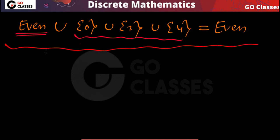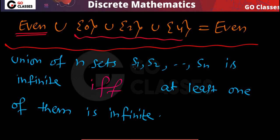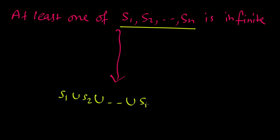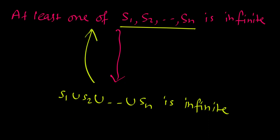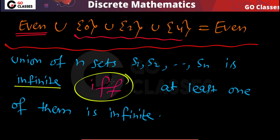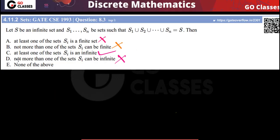The final result: the union of n sets is infinite if and only if at least one of those sets is infinite. Both directions hold — if at least one is infinite, then S1 union ... union Sn is infinite; and if the union is infinite, then at least one must be infinite. So the answer is Option C.